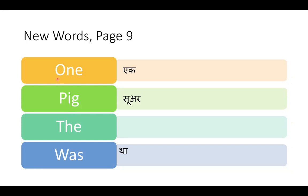Okay, ab aapke saamne jo page aaya, is mein bhi yeh shabd hain. Ek baar inko revise karayen. One — o-n-e, one — one ka arth ek. Pig — p-i-g, pig — pig ka arth soar. The — t-h-e, the. Jab sentences likhte hain toh the se shuru hota hai; aage do sentences aayenge jisme the ka use batayenge. Last word: was — w-a-s, was. Was ka arth hota hai tha.